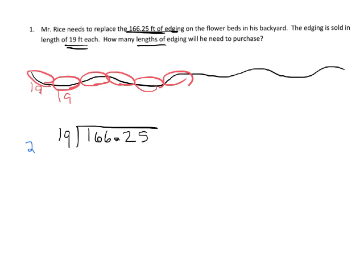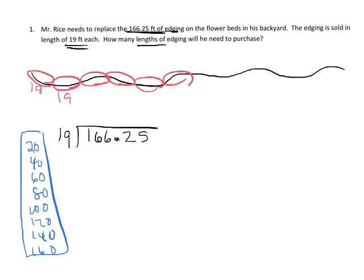I'm going to estimate by rounding 19 to 20 and skip counting until I reach 166: 20, 40, 60, 80, 100, 120, 140, 160. I stop there because going further would cross over 166. That's one, two, three, four, five, six, seven, eight — so my estimate for the quotient is 8. Let's multiply to verify: 19 times 8. Eight times 9 is 72, eight times 1 is 8 plus 7 is 15, giving us 152. Since 152 doesn't cross over 166, that's good.